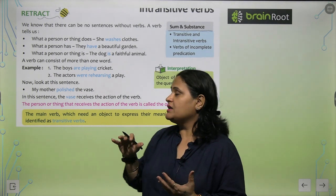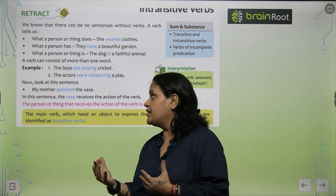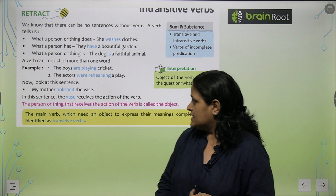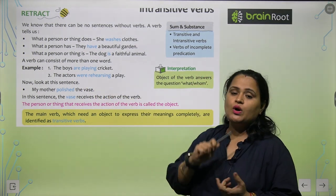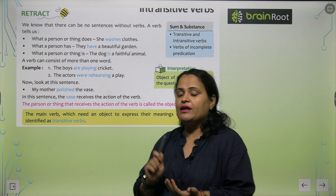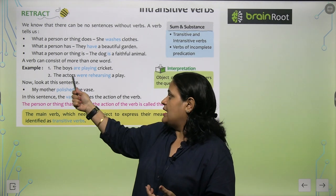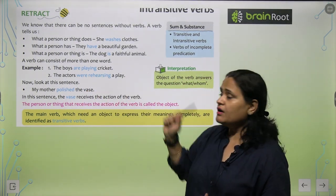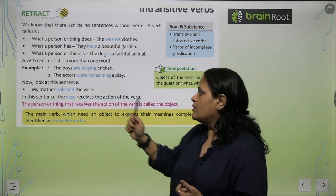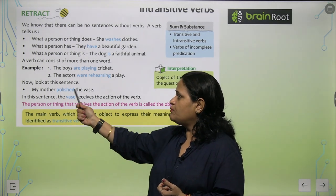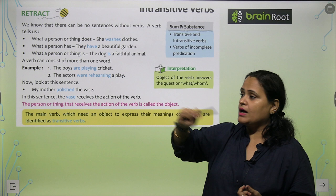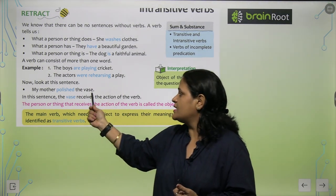A verb can consist of more than one word, jaise ki the boys are playing cricket. Here 'are' is also a helping verb and 'playing' is a verb. The actors were rehearsing a play.